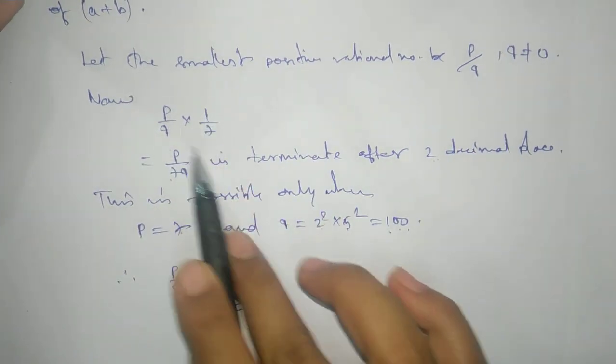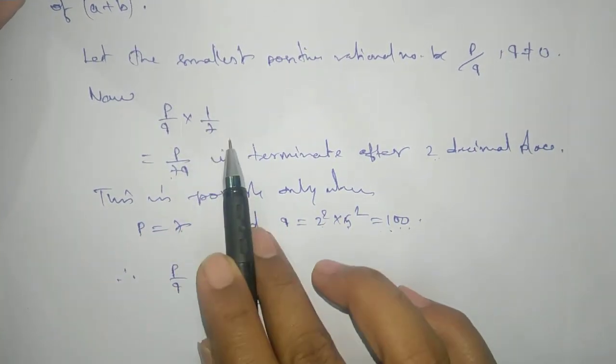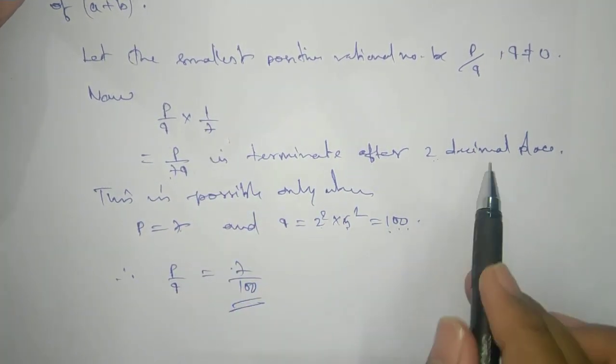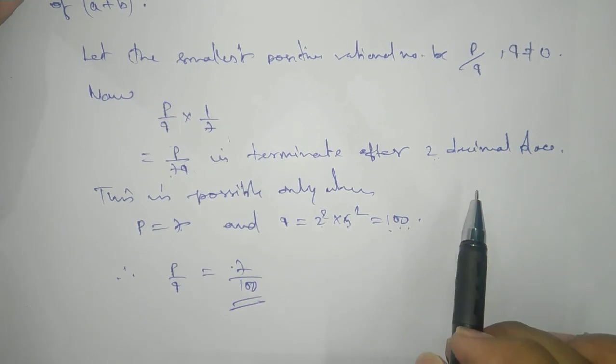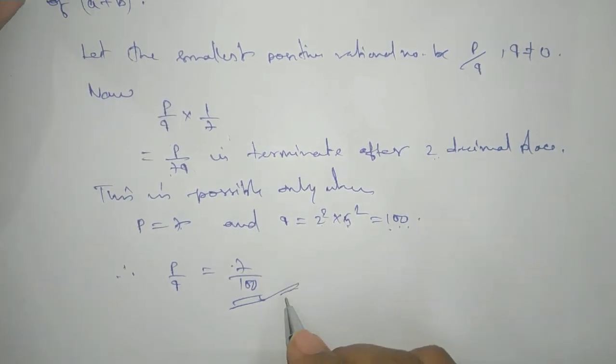Therefore p/q equals 7/100. This is our smallest positive rational number which, when multiplied by 1/7, gives a decimal that terminates after two decimal places. The answer is 7/100.